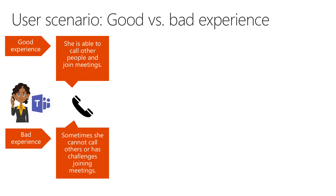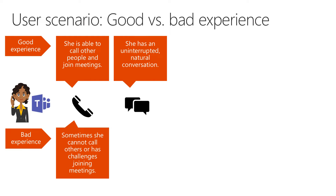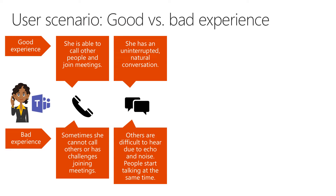Then, once she has established a conversation, she wants to have this conversation uninterrupted and natural — just talk from one person to the other or with multiple people. If it would be difficult to hear because there's loss of audio or there's noise or there's echo, or if people would start always talking at the same time because there's an unusual amount of delay, it would be very difficult to have a natural conversation.